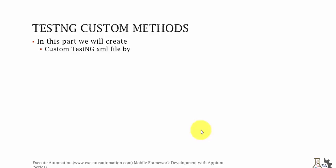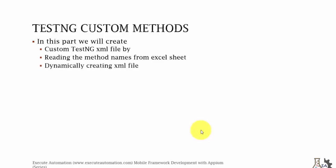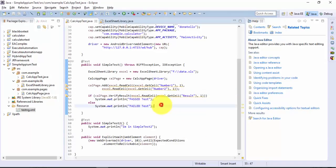We're going to do that by reading the method names from an external Excel sheet, dynamically creating the XML file, and running the tests using the TestNG XML file specified via the TestNG API. We'll do all of that in this video. Let's not waste our time and flip to Eclipse.